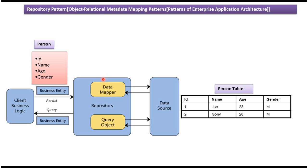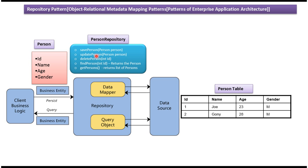I have defined one Person Repository and it has five methods: Save Person, Update Person — which accepts a Person Entity — Delete Person, which accepts an ID that is a primary key in the Person Table. Then Find Person, which based on the ID passed will get the Person information from the table, formulate the Person Object, and return it to the Business Logic. And the last method is Get Persons, which returns a list of Persons.